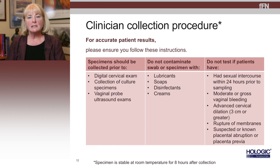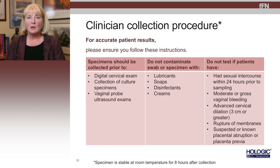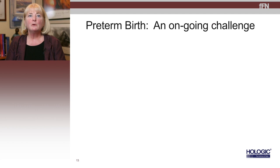There are some instances where you actually should not test a patient for fetal fibronectin. If she's had sexual intercourse within 24 hours before presenting, she's ineligible for fetal fibronectin. If she's having any bleeding, if her membranes are ruptured, if her cervix is dilated three centimeters or more, and if you know or suspect that she has a placenta previa — do not collect a fetal fibronectin.